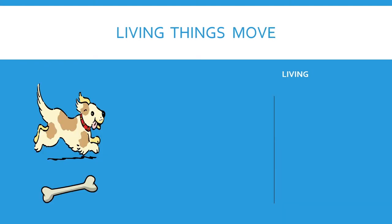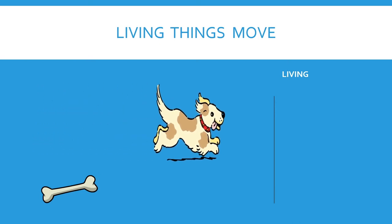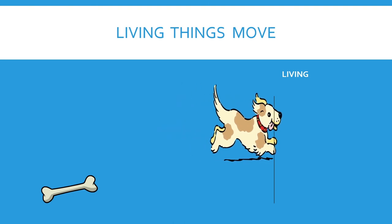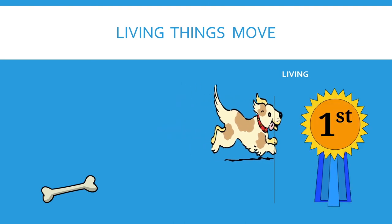Another characteristic is that living things move, and they move all by themselves without any help at all. If I look at that dog and the bone, I wonder who's going to win the race. The dog is a living thing and can move on its own. The bone just sits there on the ground because it cannot move — it's not a living thing.